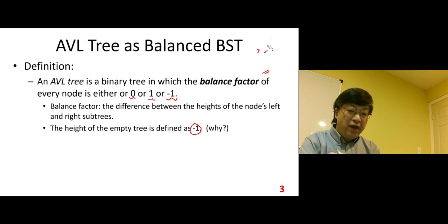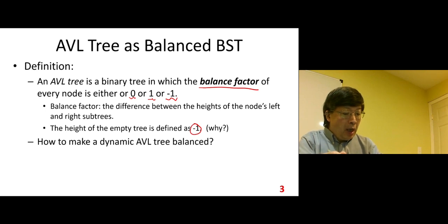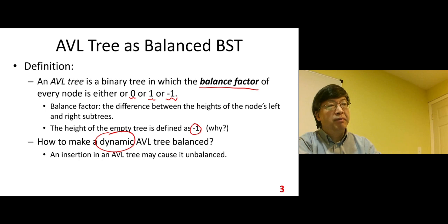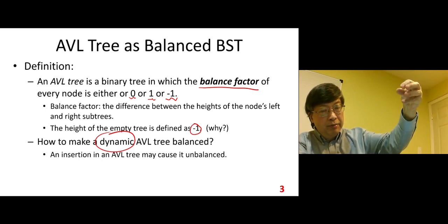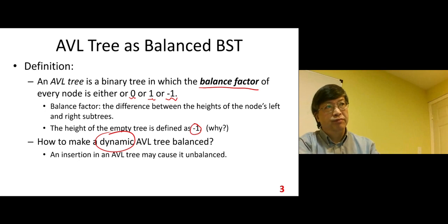With this definition, we can calculate this balance factor everywhere in the BST. How to make a dynamic AVL tree balanced? Sometimes it may not be balanced, so we want to do something to make it balanced. Insertion in the AVL tree may cause it unbalanced. We need to maintain dynamic data. When a new node is inserted, it will break the balance structure, so we need to fix it.